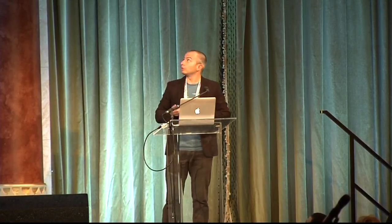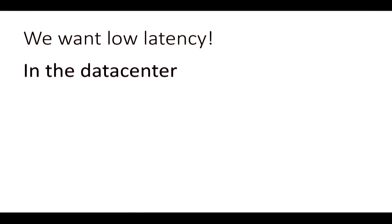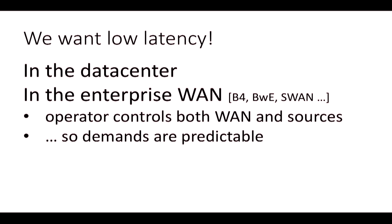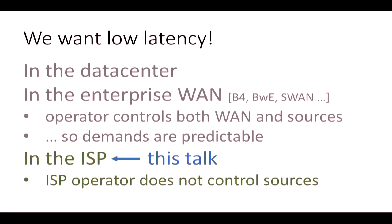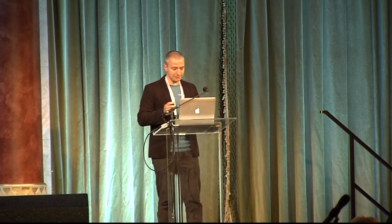We all know we want low latency. There has been excellent work on low-latency routing in data centers and in the enterprise—such as B4, BWE, and so on—where the operator controls both the wide-area network and the sources, so demands are mostly predictable. This talk is about the ISP setting, where the operator does not control the sources. This lack of control over resources is one thing that makes the ISP setting very challenging.